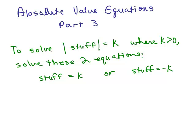This is part 3 of how to solve absolute value equations. In parts 1 and 2, we found out that the way to solve the absolute value of something equals k, where k is greater than 0, is to solve these two equations: stuff equals k and stuff equals negative k.